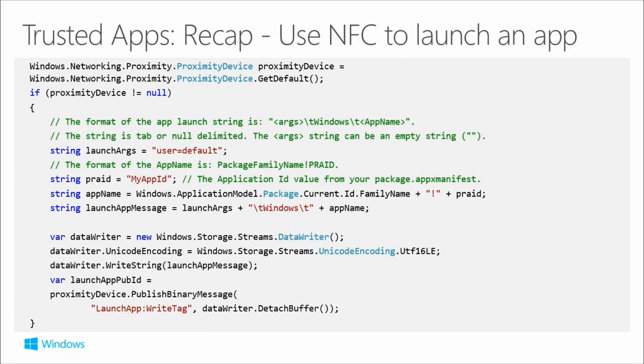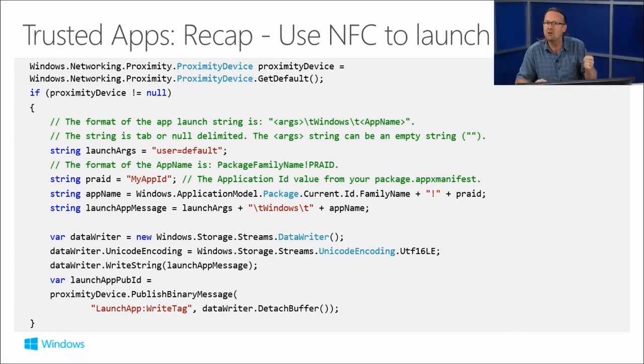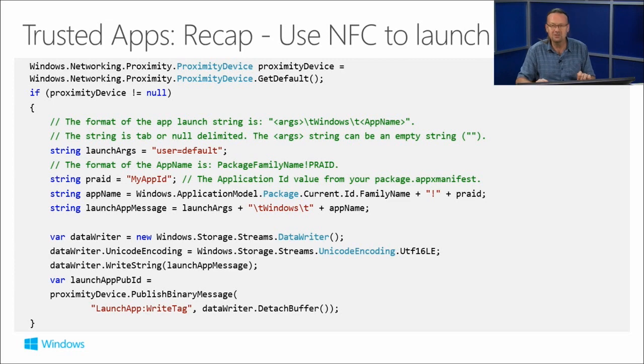If it's not null, you can format a special format string and then call publish binary message at the bottom. There are other publish APIs as well - publish string message and that sort of thing. Particular formats like launch app colon write tag is a way you can get an app to launch on another device, such as a tablet or another phone. So you can tap it and launch the app on another phone.